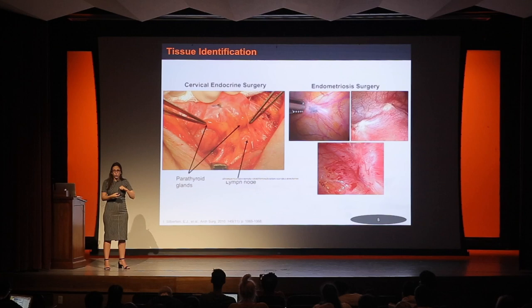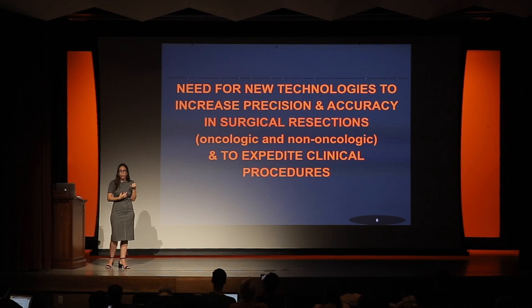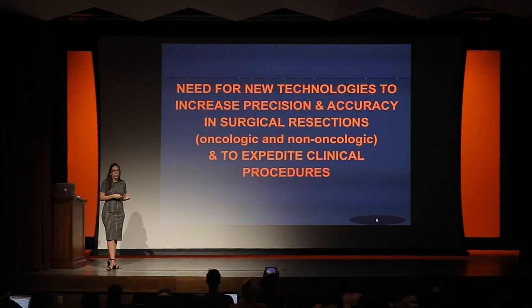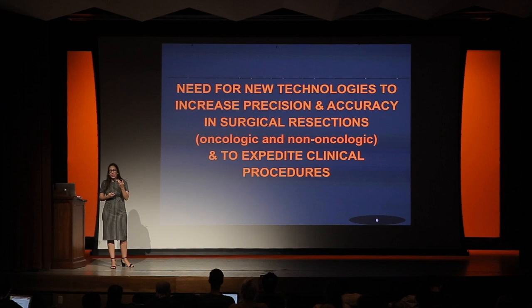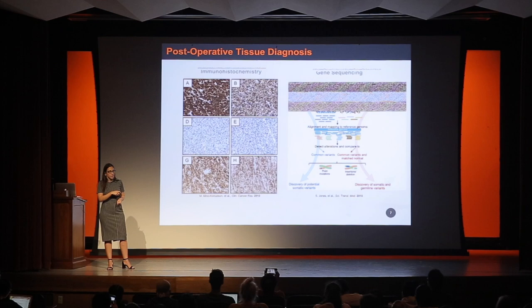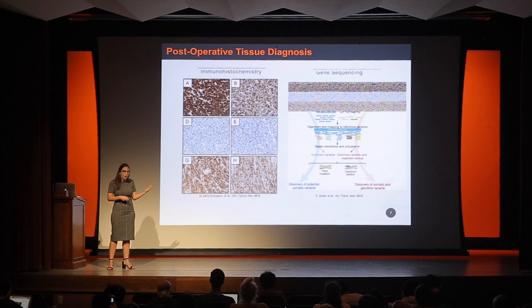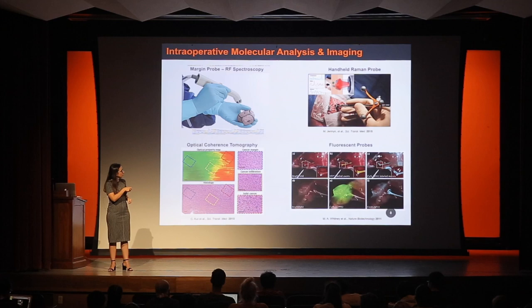There is a really big need for new technologies that can help surgeons better identify tissue more rapidly in the operating room, with a higher level of precision and accuracy in surgical resection — for cancer surgery, but also outside of cancer surgeries. More traditional technologies like immunohistochemistry and sequencing are performed after surgery, so you'd only have an answer after a week or week and a half. Other approaches using spectroscopy — Raman, optical coherence tomography, and fluorescence probes — are being developed, but none of these offer the level of chemical specificity and sensitivity that mass spectrometry does.